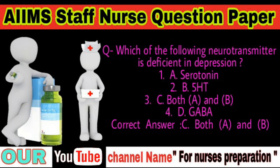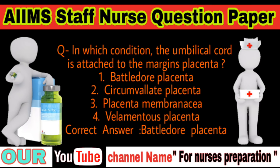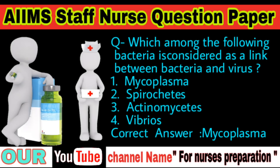Question: In which condition is the umbilical cord attached to the margins of the placenta? Options: Battledore placenta, circumvallate placenta, velamentous placenta. Correct answer is Battledore placenta. Question: Which among the following bacteria is considered as a link between bacteria and virus? Options: Mycoplasma, spirochetes, actinomycetes, vibrios. Correct answer is Mycoplasma.